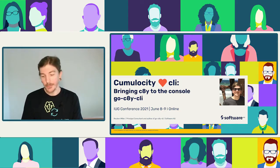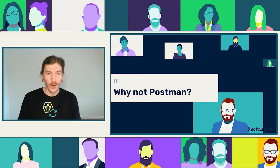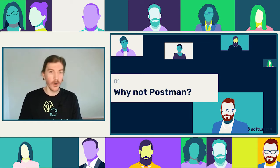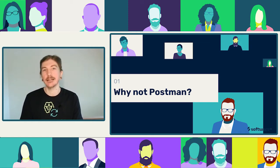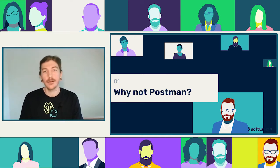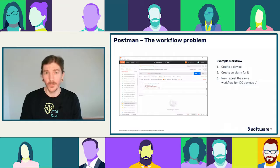You might ask: console — a little bit scary, why not just use Postman? Postman is the classic way that someone starts experiencing the Cumulocity API. Everyone knows it, it has a nice friendly UI, which is really inviting at first, but it has one major problem. So let's look at a workflow.